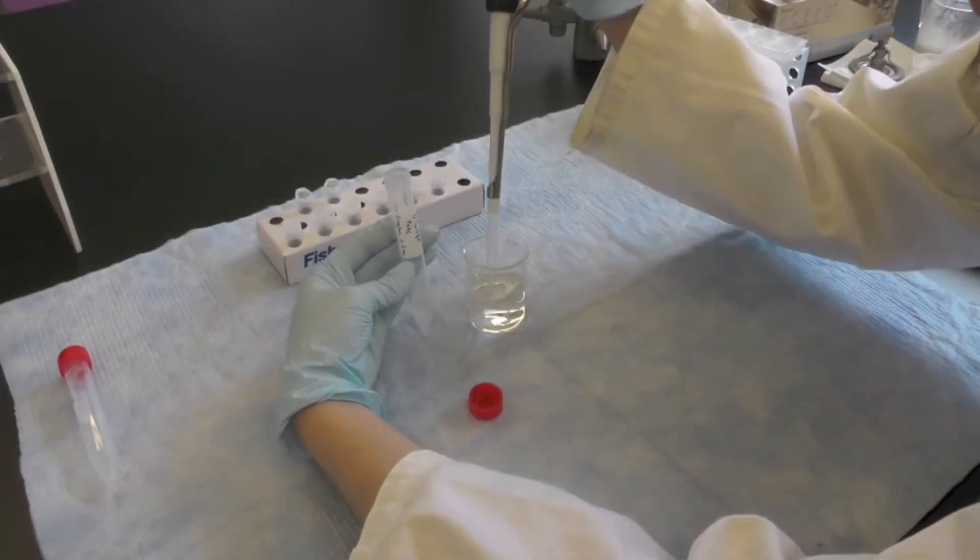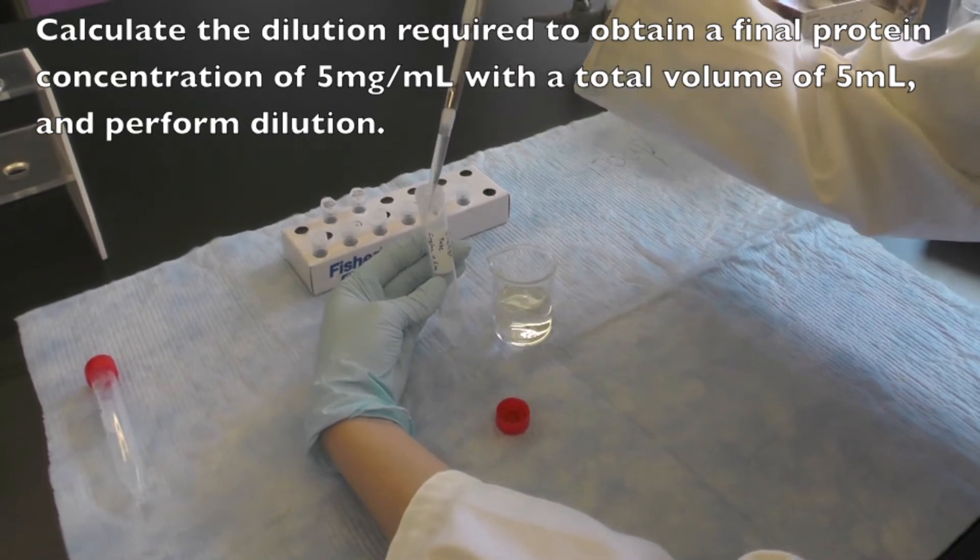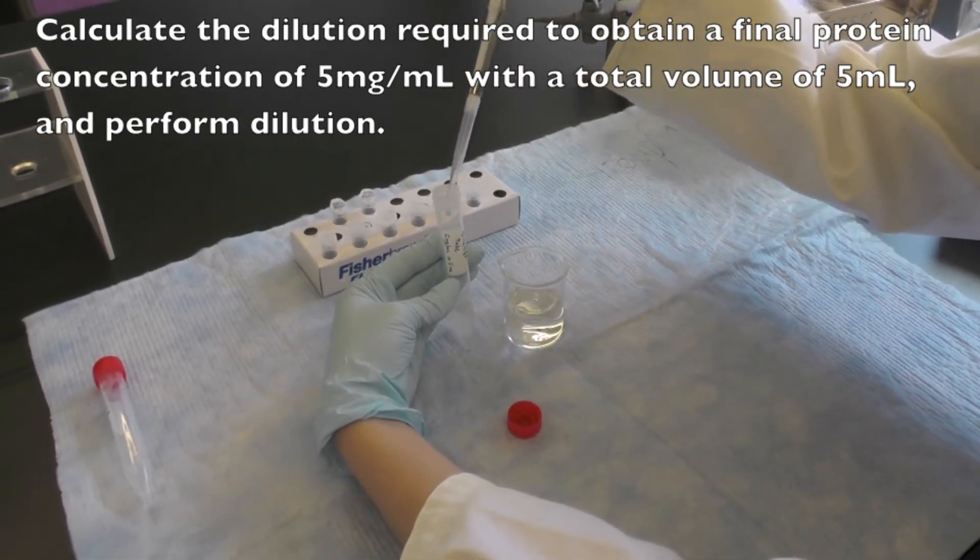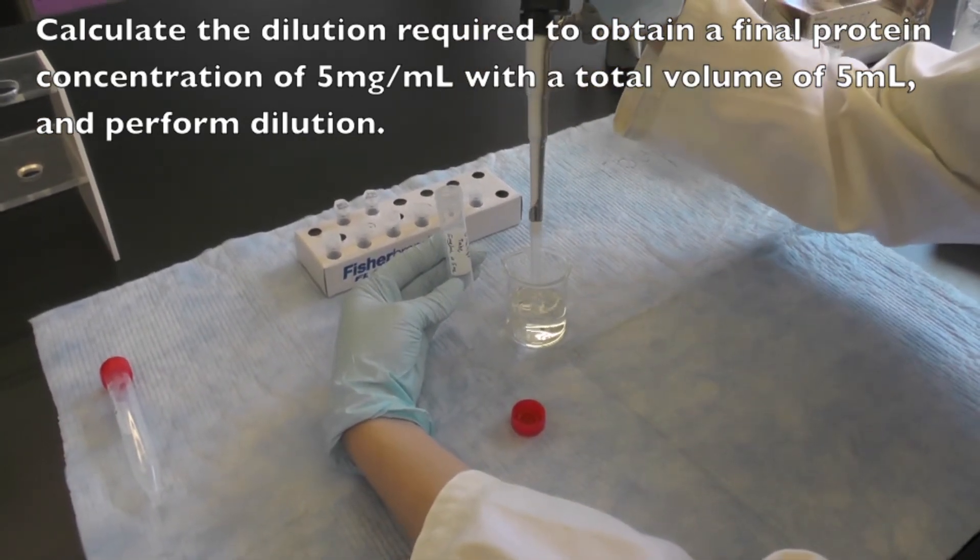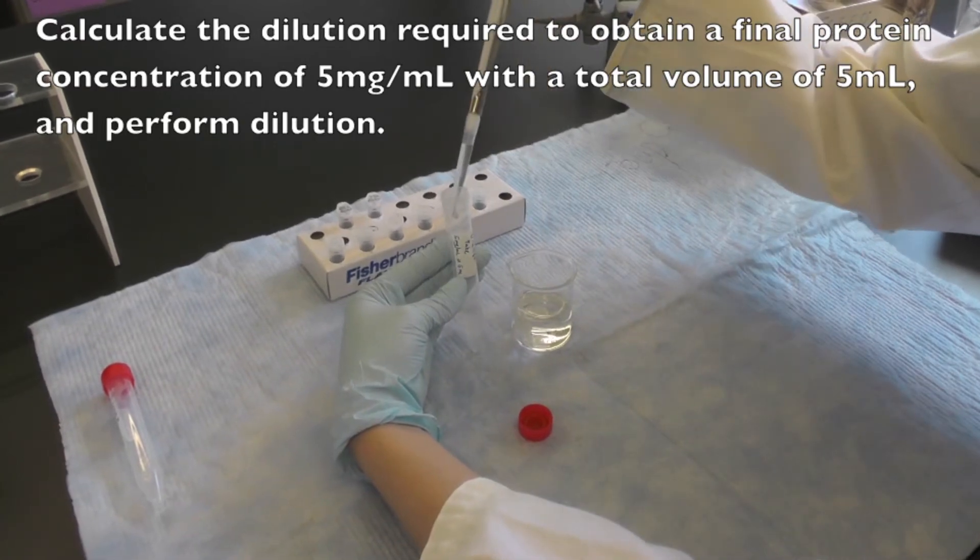Finally, calculate the dilution required to obtain the final protein concentration of 5 mg per mL in a total volume of 5 mL. Use DD water as your diluent.